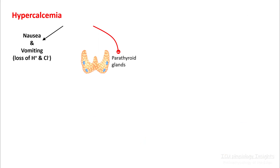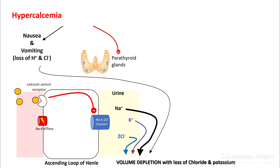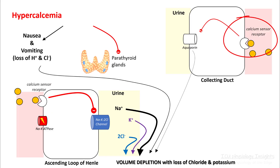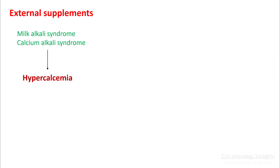Hypercalcemia causes nausea and vomiting with some loss of hydrogen and chloride ions. However, the strongest effect of hypercalcemia is in the ascending loop of Henle, where it inhibits the sodium-potassium-2-chloride channel via the calcium-sensing receptor, resulting in a lot of sodium, potassium, and chloride loss in the urine. It also inhibits aquaporin channels in the collecting duct, worsening volume depletion — that is why patients with hypercalcemia are severely volume depleted on presentation. Patients with milk-alkali syndrome or calcium-alkali syndrome will have hypercalcemia and can develop metabolic alkalosis.